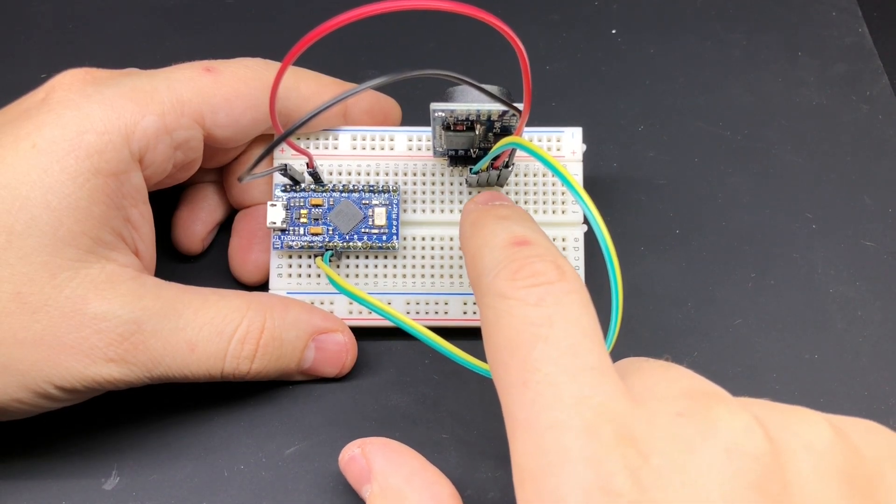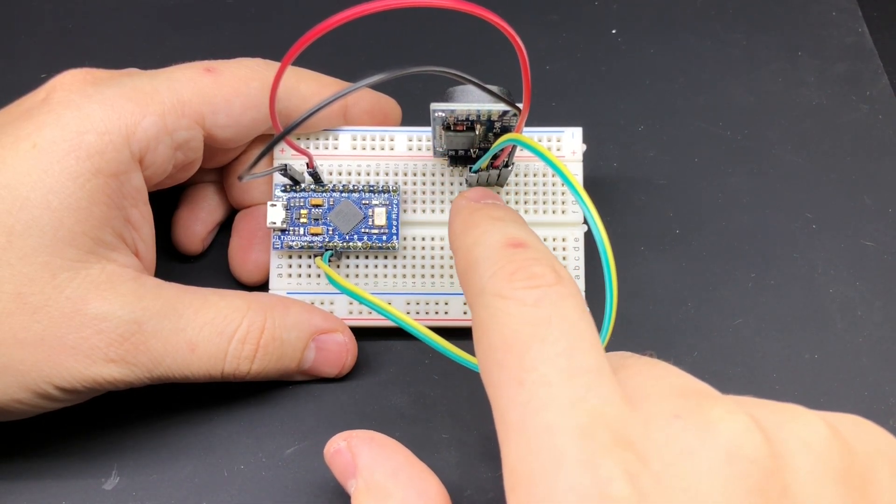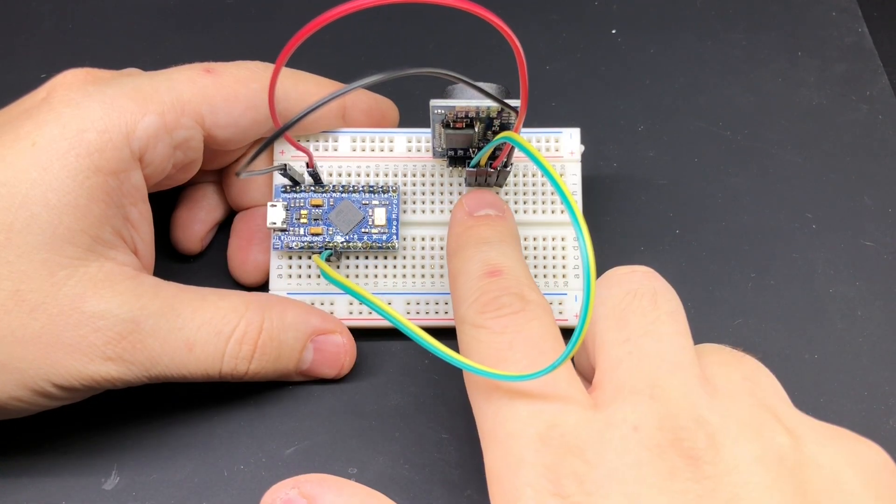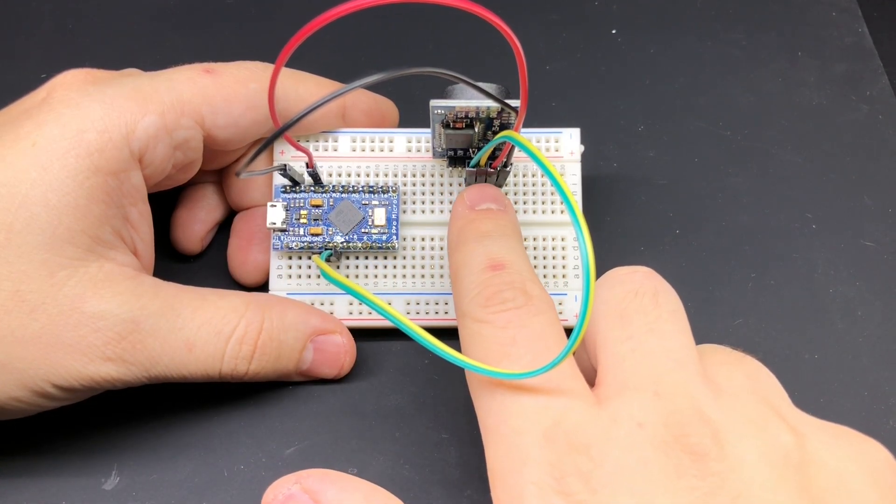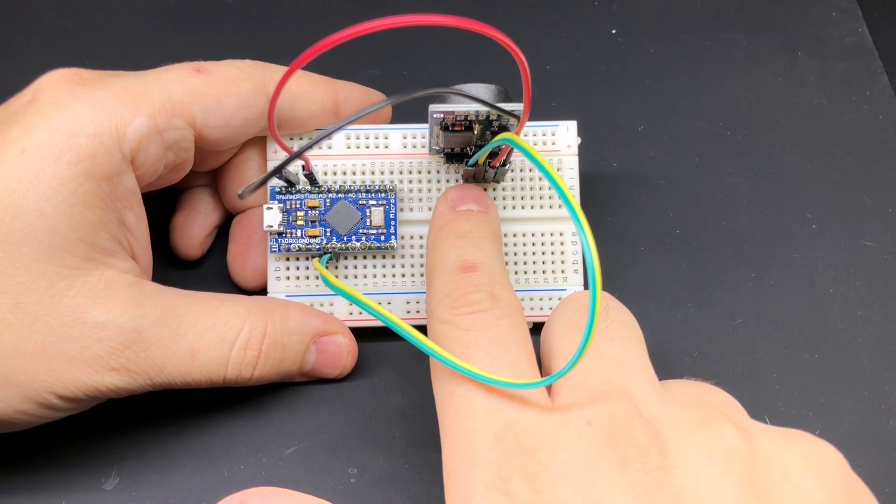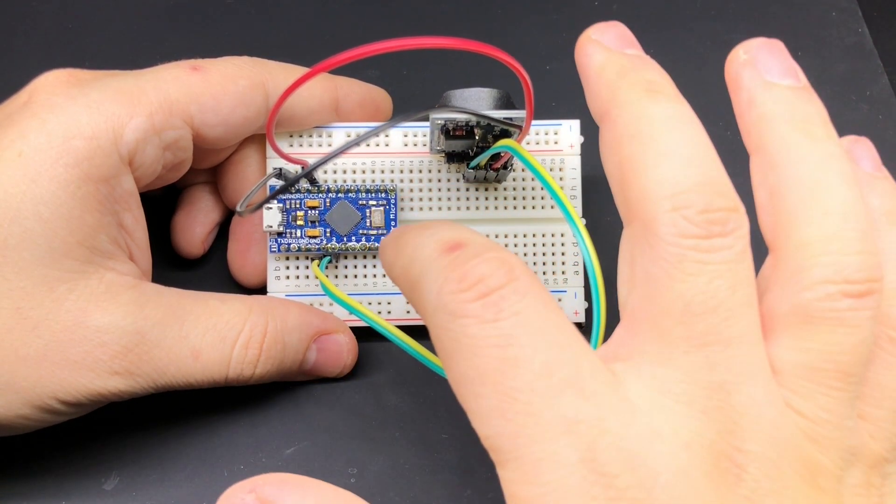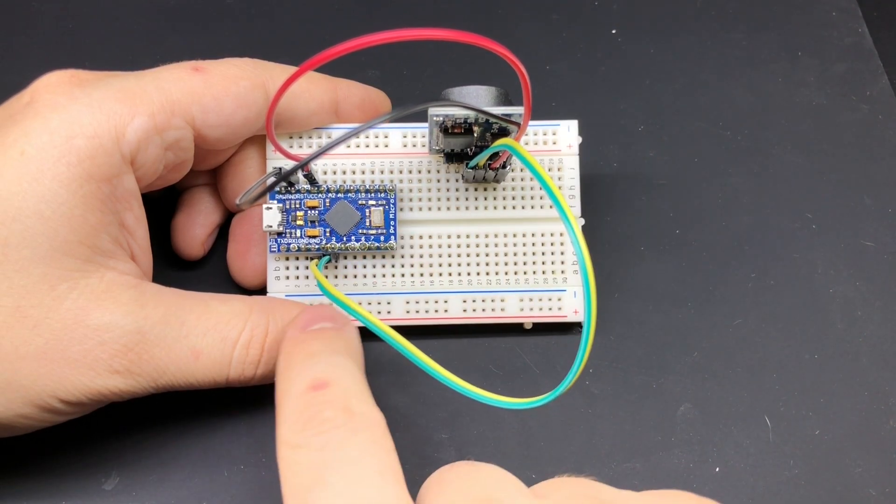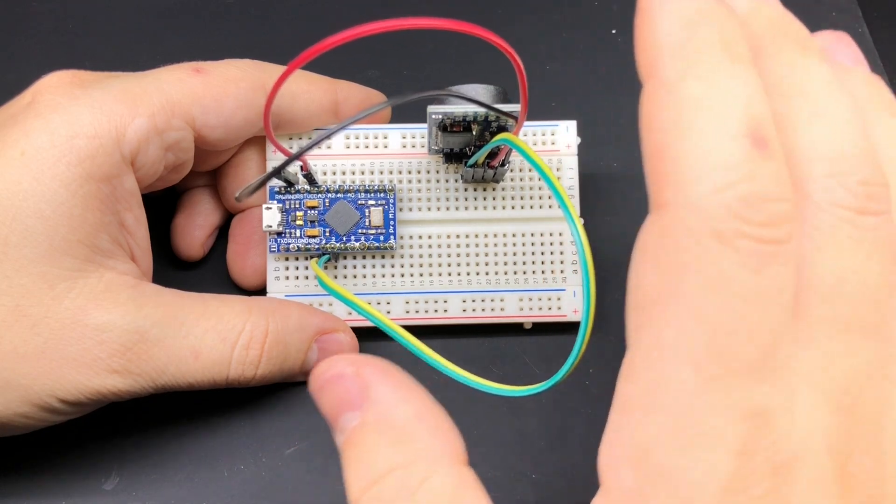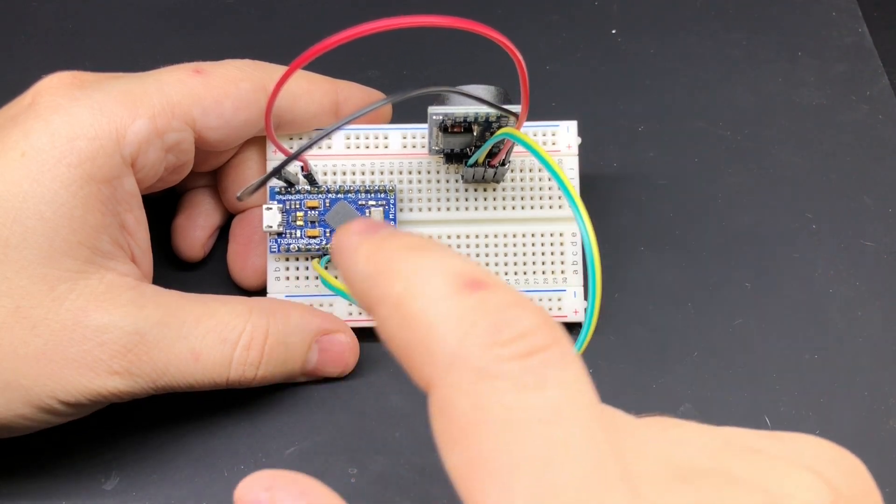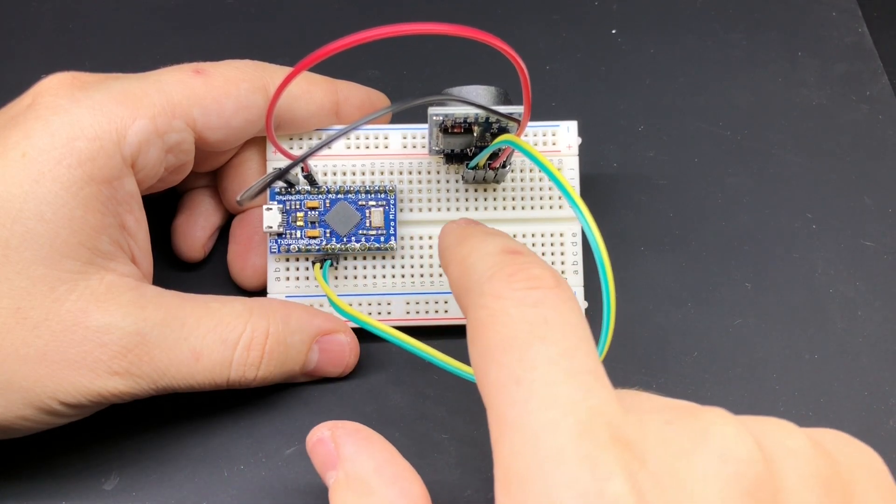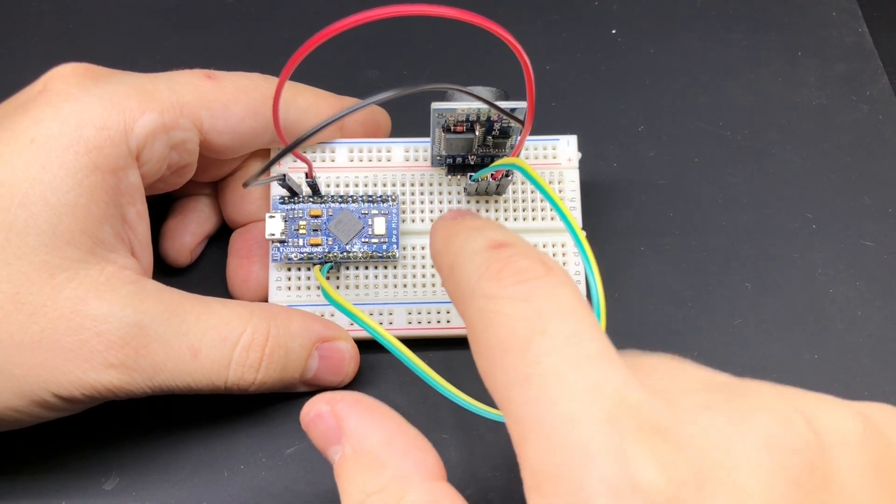I've got the VCC pin on the real-time clock module connected to the VCC pin on my Arduino, same thing with ground. Then I've got my SDA pin, which is the yellow wire here, connected to pin 2 and then the SCK pin connected to pin 3. Now if you're using a different Arduino board these pins may be different for you, so you want to look up on your particular board how to use the I2C interface. But for this board, the SparkFun Pro Micro, you can use pins 2 and 3 for SDA and SCK respectively.